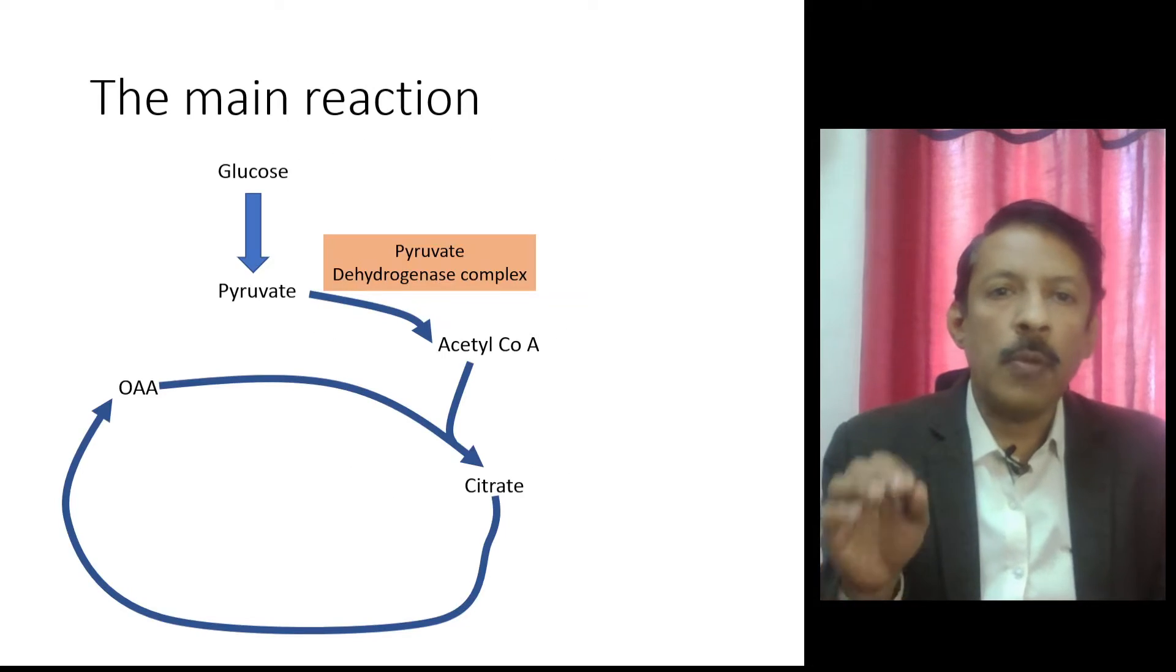In normal metabolism, glucose enters into the cell with the help of the hormone insulin. Through glycolysis it forms pyruvate.